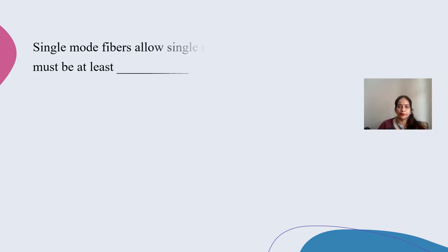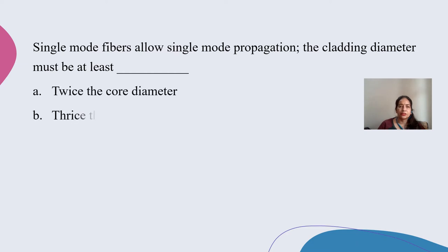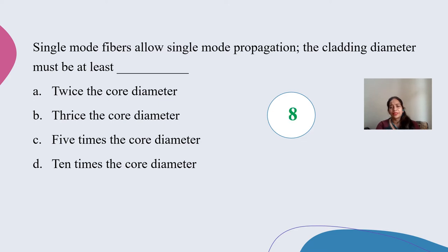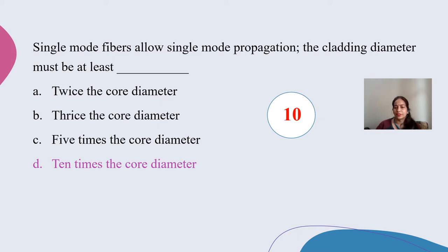Next question: In a single mode fiber that allows single mode propagation, the cladding diameter must be at least — twice the core diameter, thrice the core diameter, five times the core diameter, or ten times the core diameter. The correct answer is ten times the core diameter. The cladding diameter in a single mode fiber must be ten times the core diameter. This larger ratio contributes to accurate propagation of light and avoids losses from the evanescent field.